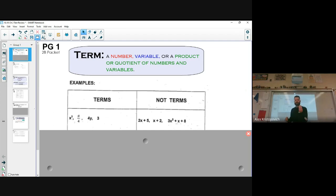4y, that's a product, a multiplication of a number and a variable. That's also a term. A divided by four, that's a term. And then x to the third, that's a term, right? It could also just be a variable, right? So just like p, that's a term, right?